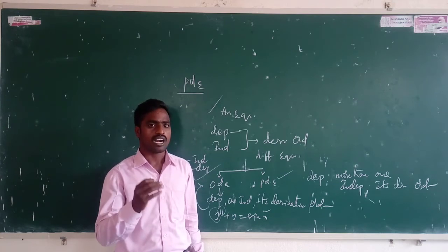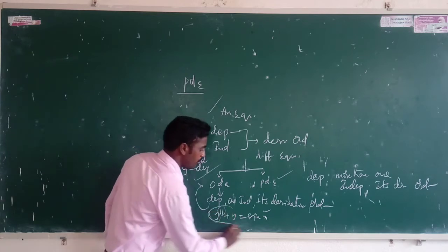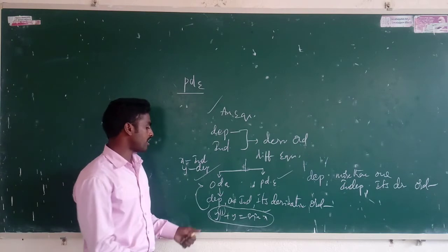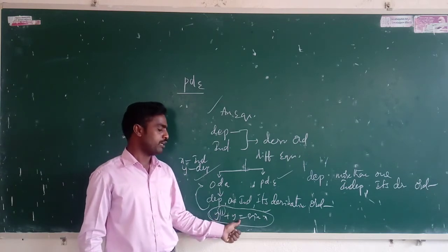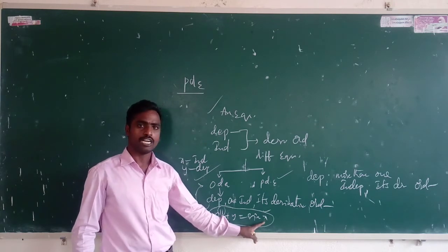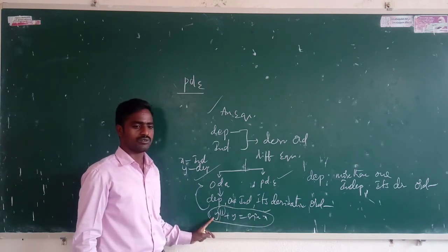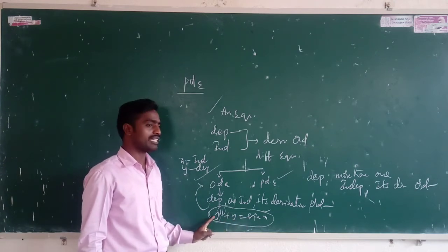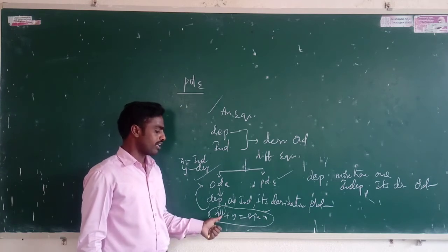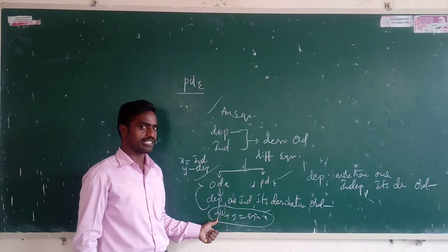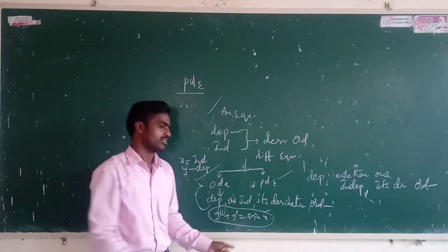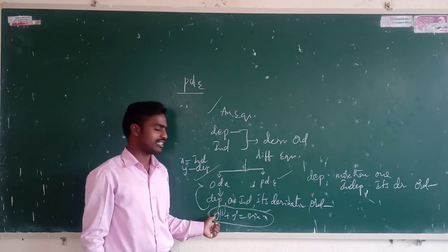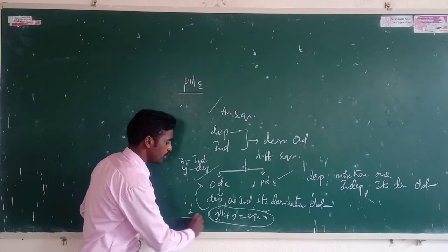Why do we call this an ordinary differential equation? In this equation, x is the only independent variable. The derivative order is second order — second order is the highest order. The order of this equation is 2, so 2 is the order of this differential equation.